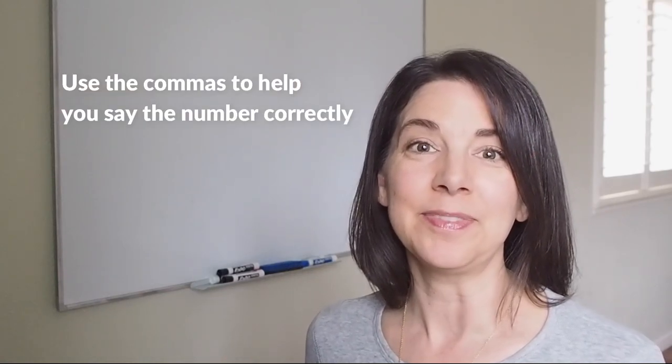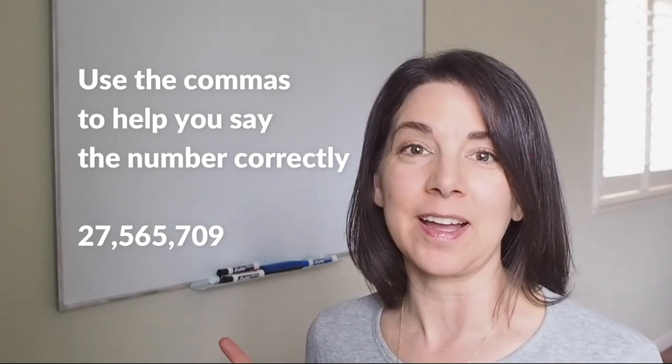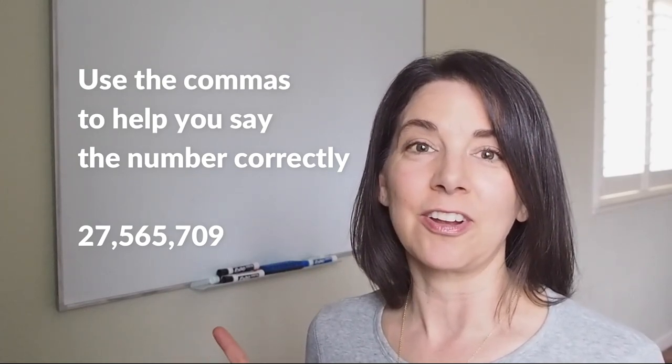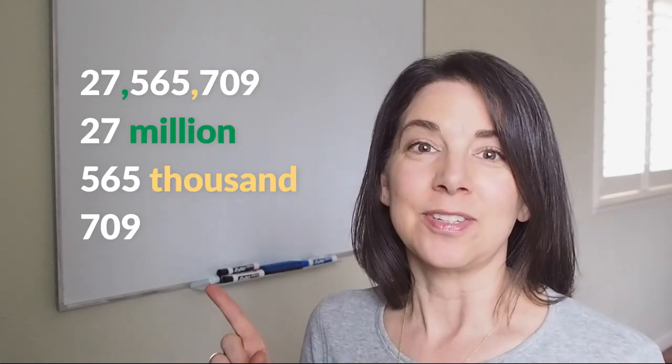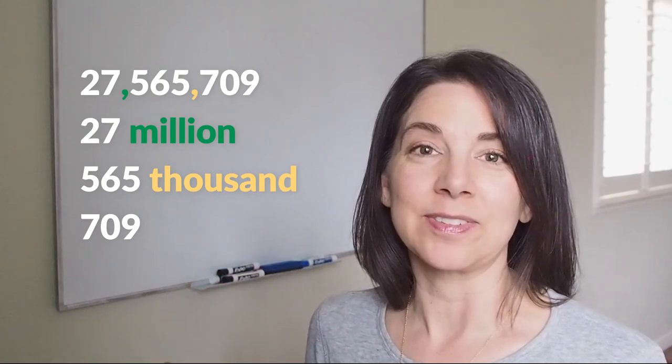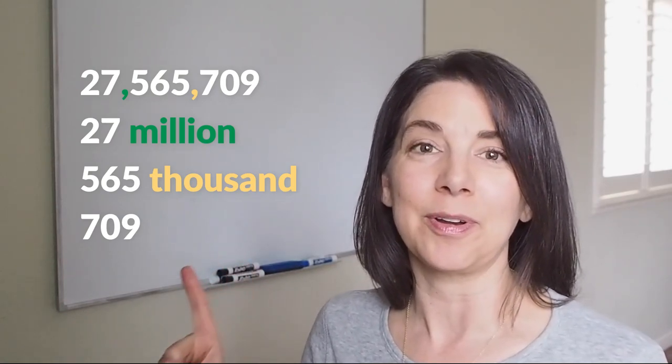So if you have this number, twenty-seven million five hundred sixty-five thousand seven hundred nine, you want to be sure that you add a comma to indicate where the thousands and hundreds are separate, and then the same thing for separating the millions from the thousands.